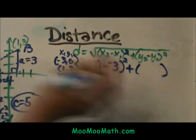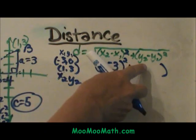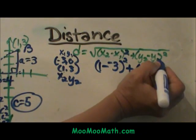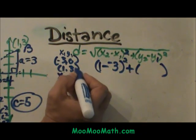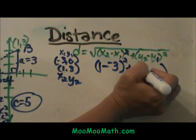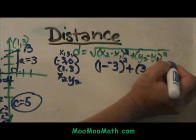Plus I am going to subtract my y coordinates. y2 minus y1. So I am going to subtract my y coordinates. Three minus zero quantity squared.